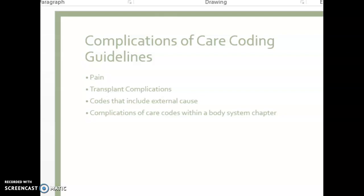When coding intraoperative and post-procedural complications, these codes are found within the body system chapters with the code for the specific organ or structure of that body system. For example, coding post-procedural heart failure following cardiac surgery would use I97.130 for the post-procedural heart failure, then I50.9 for heart failure. As a coder, you always need to read your code descriptions and ask yourself: did that description tell my whole story? If not, go back and find the code for what you're missing.